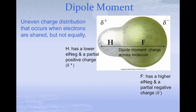Here is an example: hydrogen fluoride. Hydrogen has a very low electronegativity, so it has a weak pull on electrons, while fluorine has a very high electronegativity and a strong pull. This results in a dipole moment — an uneven charge distribution across the molecule. The delta symbol is often used to mean partial, so we have a partial positive charge on hydrogen and a partial negative charge on fluorine. This isn't a complete charge because it's still a covalent bond, but the molecule behaves like a tiny magnet.